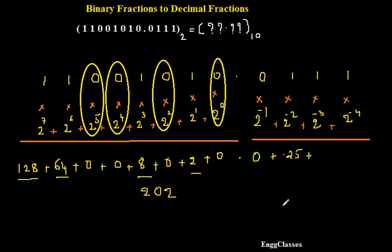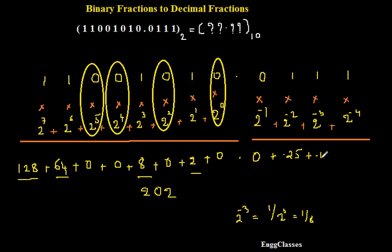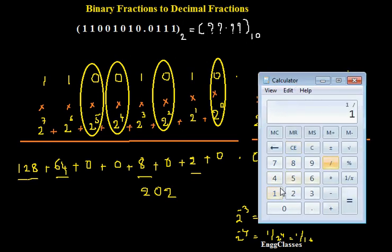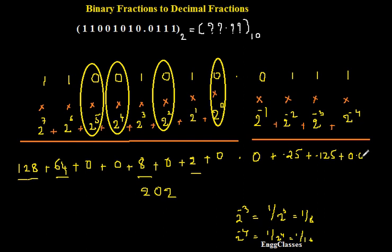Similarly, 1 into 2 to the power minus 3 — 2 to the power minus 3 can be written as 1 divided by 2 to the power 3, which is 1/8. Using the calculator, 1 divided by 8 turns out to be 0.125. Plus the last digit: 2 to the power minus 4 is 1 divided by 2 to the power 4, which equals 1/16. Using the calculator, 1 divided by 16 turns out to be 0.0625.